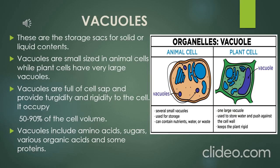The next cell organelle is vacuoles. These are storage sacs for solid or liquid contents — they can store both. Vacuoles are small-sized in animal cells, while plant cells have very large vacuoles.